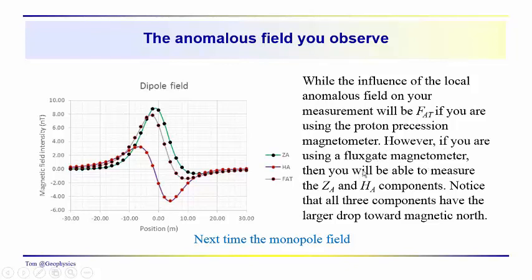However, we could use a flux gate magnetometer and be able to measure Z sub A and H sub A. The anomalous field that we observe over something represented by a dipole is just a scalar field — using a proton precession magnetometer gives us a total field measurement. Just notice that when looking at these component plots, if we're off to the north, each of these components tends to drop a little more to the north and into the negative — especially the horizontal component — compared to the south.